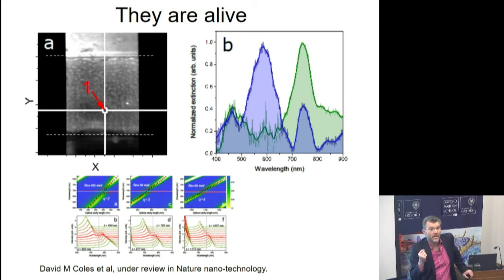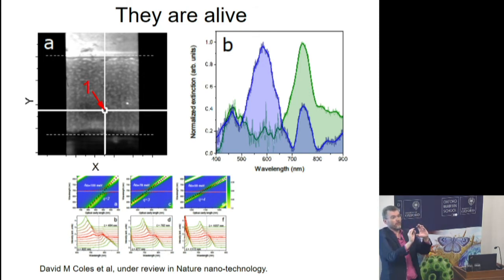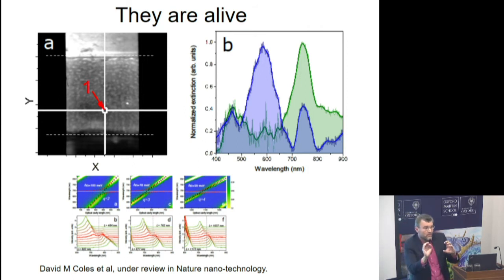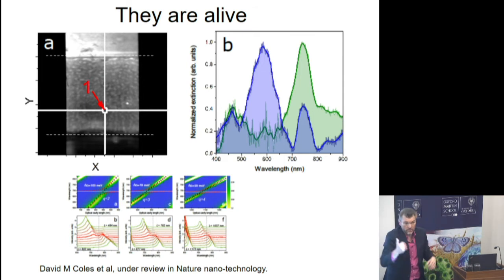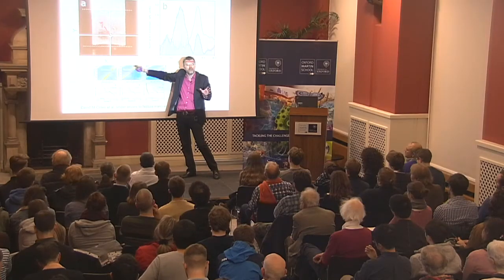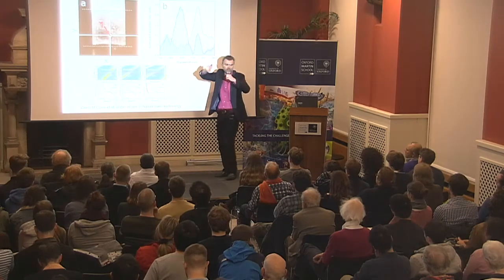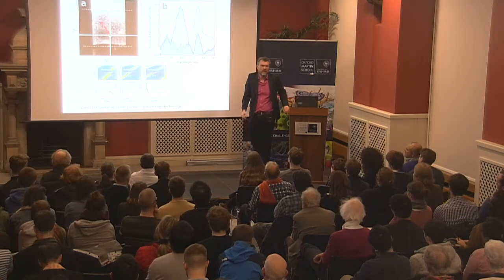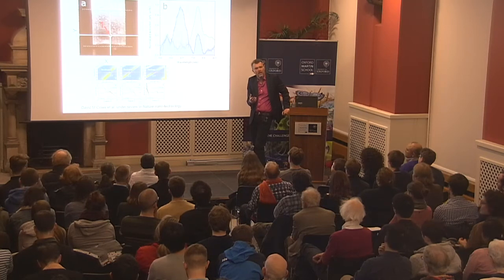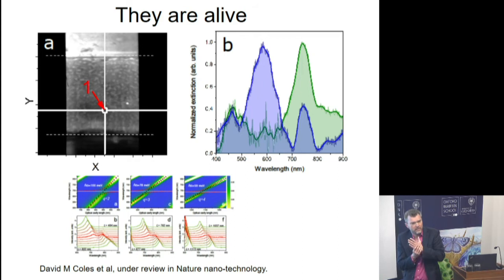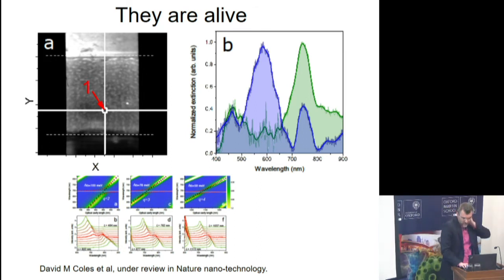To verify the bacterium is alive, we introduced a dye molecule that a living bacterium will repel but that enters once it's dead — a molecule observable through spectroscopy. So while Dave was observing quantum mechanical entanglement in these experiments, he was simultaneously observing this molecule kept outside the bacterium. We're talking about two or three bacteria that quantum mechanically interact with light — a really tiny number.